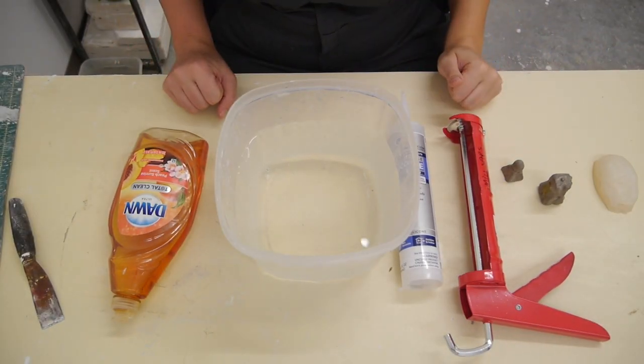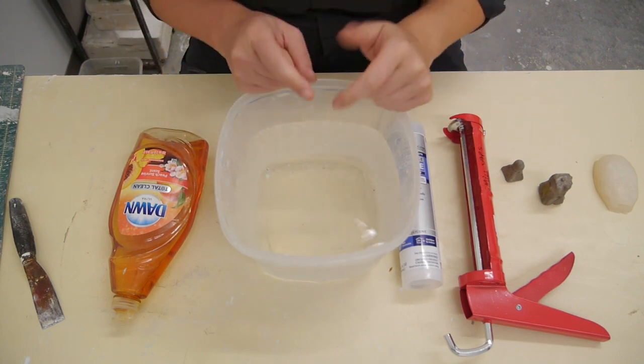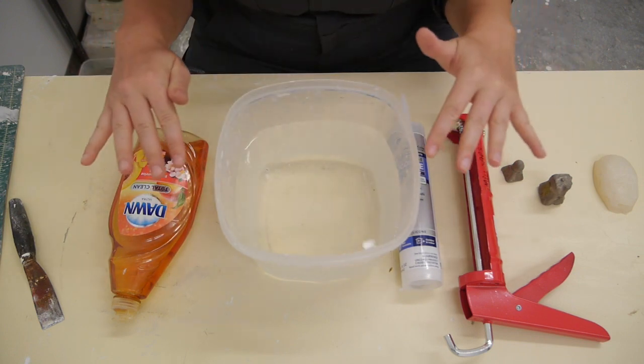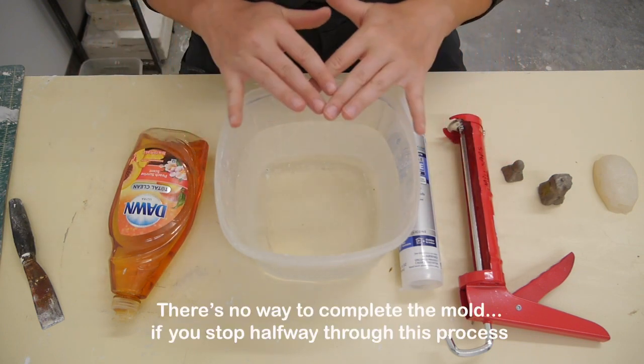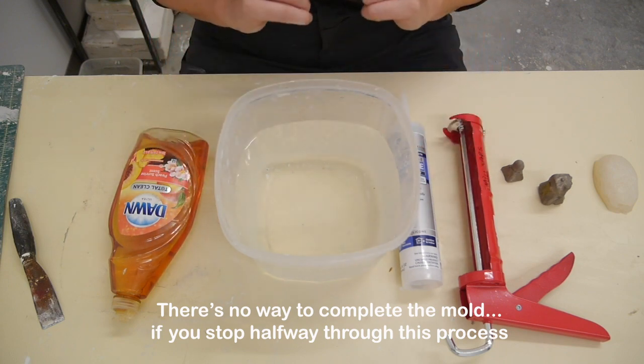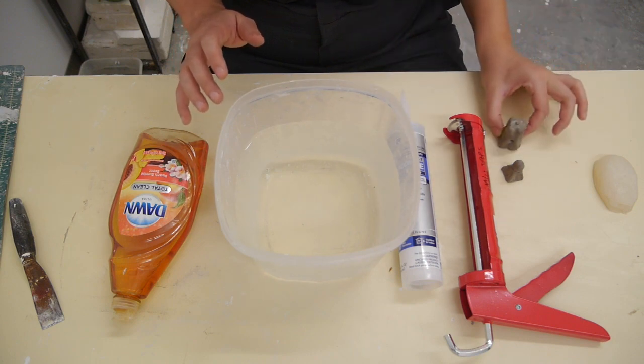This is what your workstation should look like when you start to go about your silicone mold. When you start, you have to finish. There is no way you can complete the mold. You want to make sure you have all of your materials, a clean space, and your pattern is the way that you like it. I have my two patterns here.